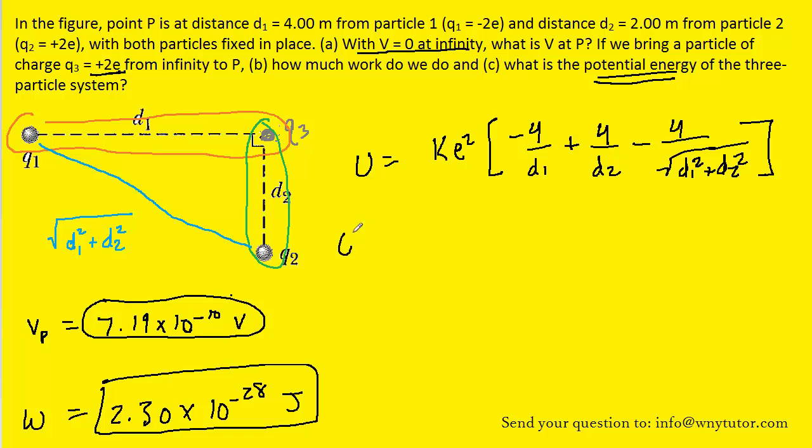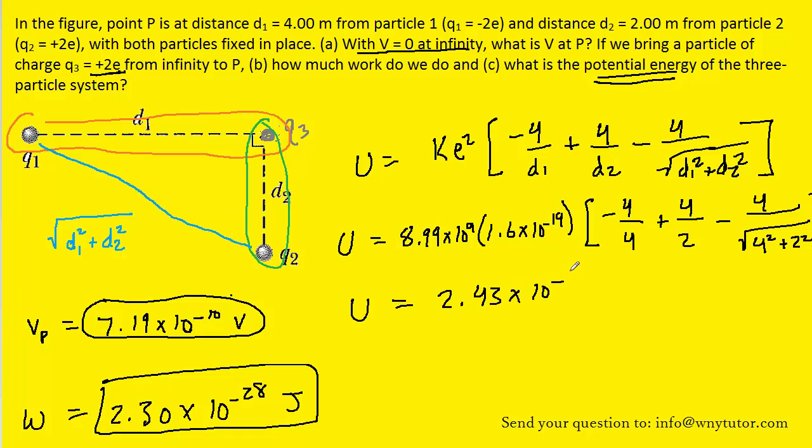And then we'll pick up our pencils and plug in the known values. So this K was 8.99 times 10 to the ninth. We know E is 1.6 times 10 to the minus 19. And then we know the distances are d1 and d2, so we'll fill those in. Let's process that on our calculators. And we should get about 2.43 times 10 to the minus 29. And once again, since we used standard units, the unit here would be the standard unit joules. So this would be the correct answer to part C.